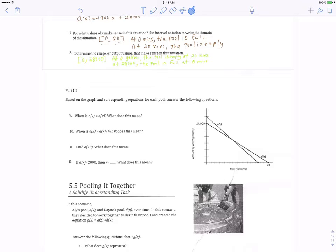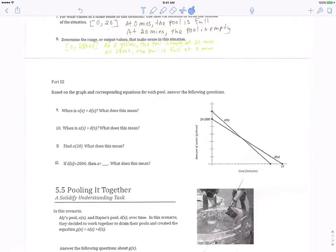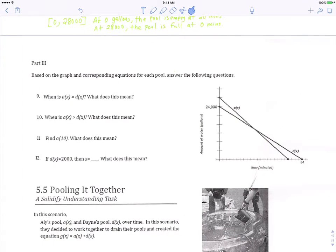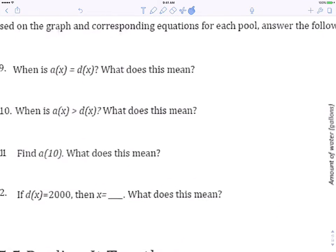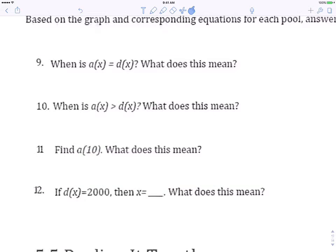Let's finish this up, okay? Question 9. Based on the corresponding graphing equations for each pool, answer the following questions. When is A of X equals D of X? What does this mean?